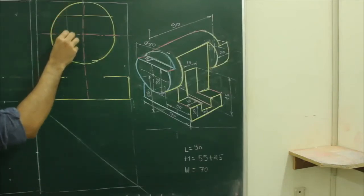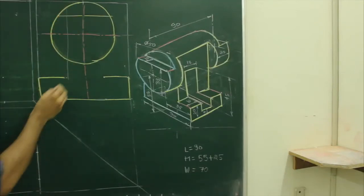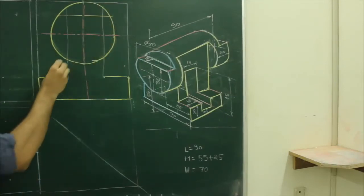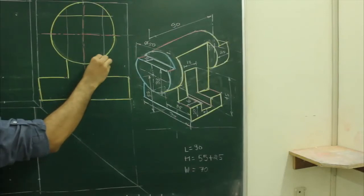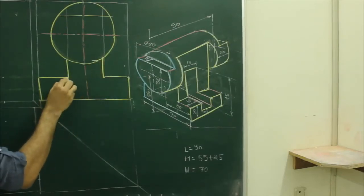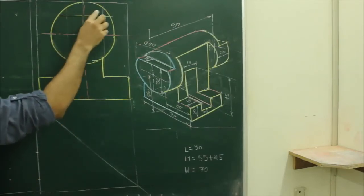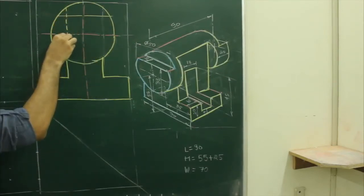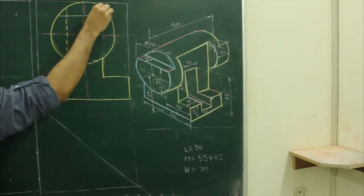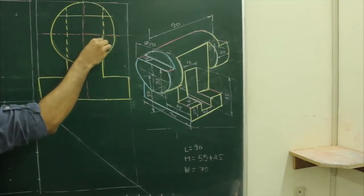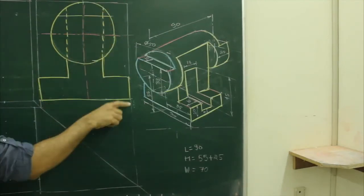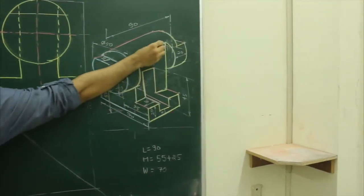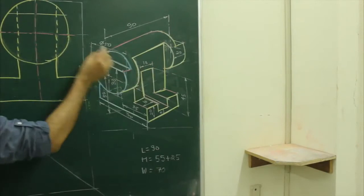We will draw this line — this much will be dark, and this will be dotted. Because when you see from the side view, you can't see this edge, so that edge is drawn as dotted.